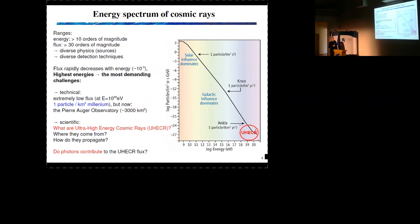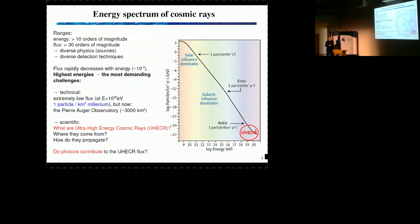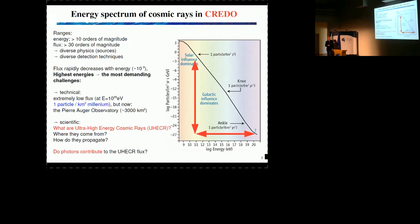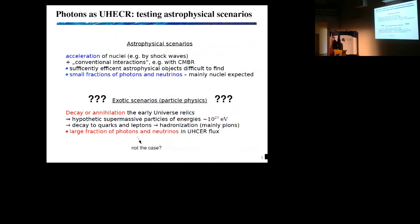But even with this instrument, we can have only a handful of events at the highest energies. So it means challenges. Challenges, of course, technical, also scientific. We know that these particles here, at the highest energies, at 10 to 20, we know that they exist. But we have no ideas what are they, where they come from, how do they propagate. And in particular, for this talk, a question we ask is, do photons contribute to ultra high-energy cosmic ray flux?